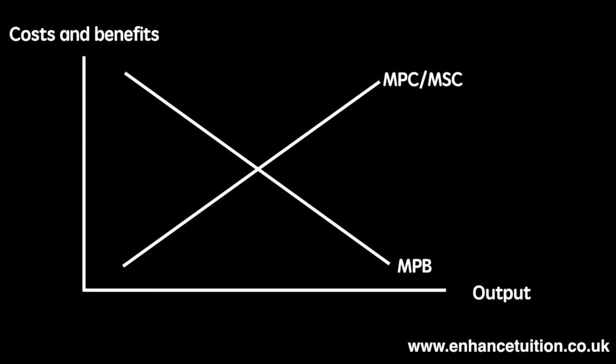The equilibrium price and output for this combination is P star and Q star. The free market would provide Q star quantity at a price of P star. If we factor in the costs imposed to individuals not involved in the transaction and subtract them from the marginal private benefit, we arrive at our marginal social benefit. This includes the cost to the individual and all third parties. You'll notice it is to the left of the marginal private benefit curve.